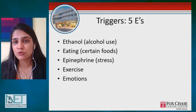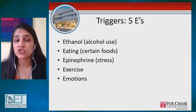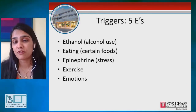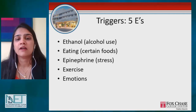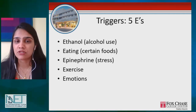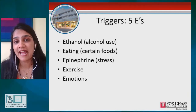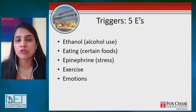There are some triggers of carcinoid syndrome — the five E's, as we call them. It can be alcohol, certain foods, so we call it eating, stress and release of epinephrine, or epinephrine given as anesthesia, exercise, as well as emotions. Some patients actually have to use short-acting octreotide analogs around these triggers so that it doesn't make them miserable.